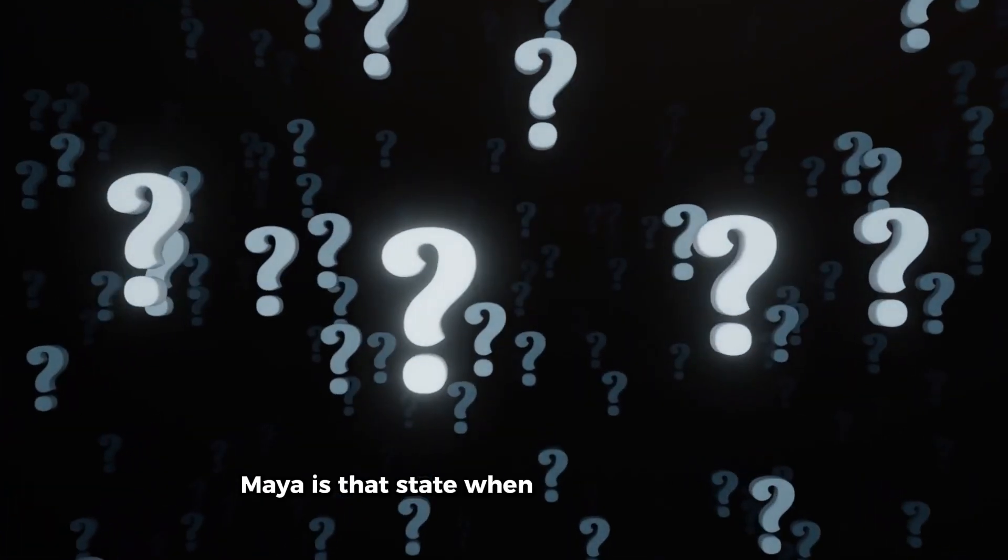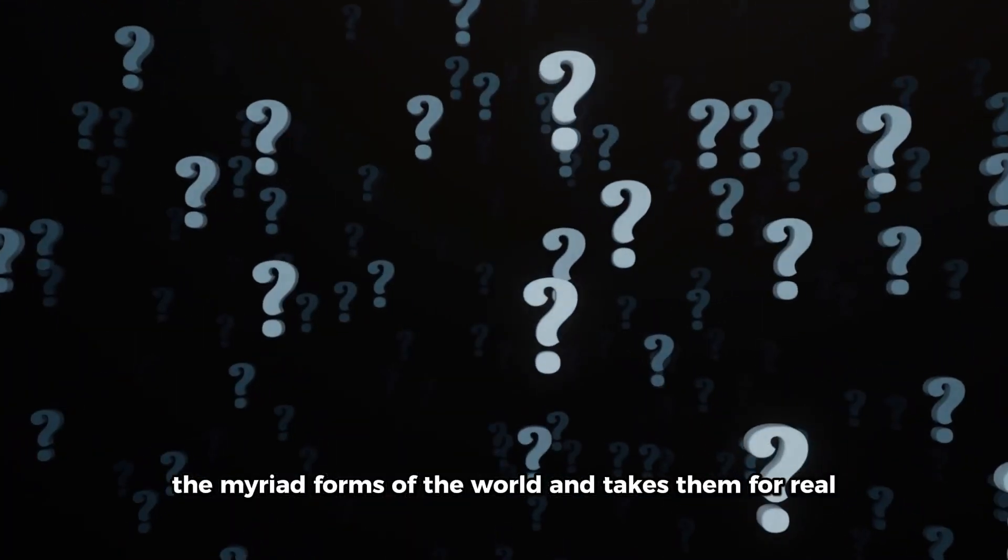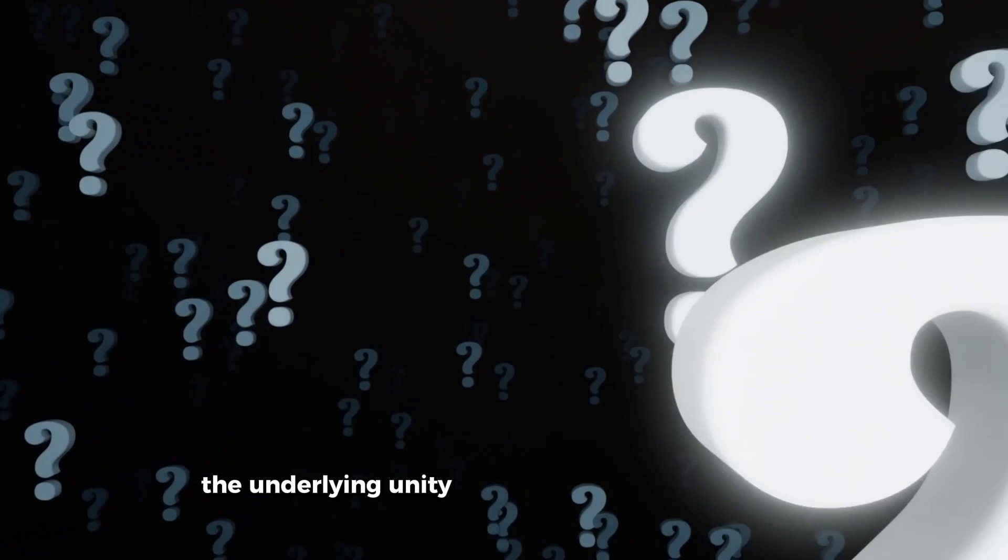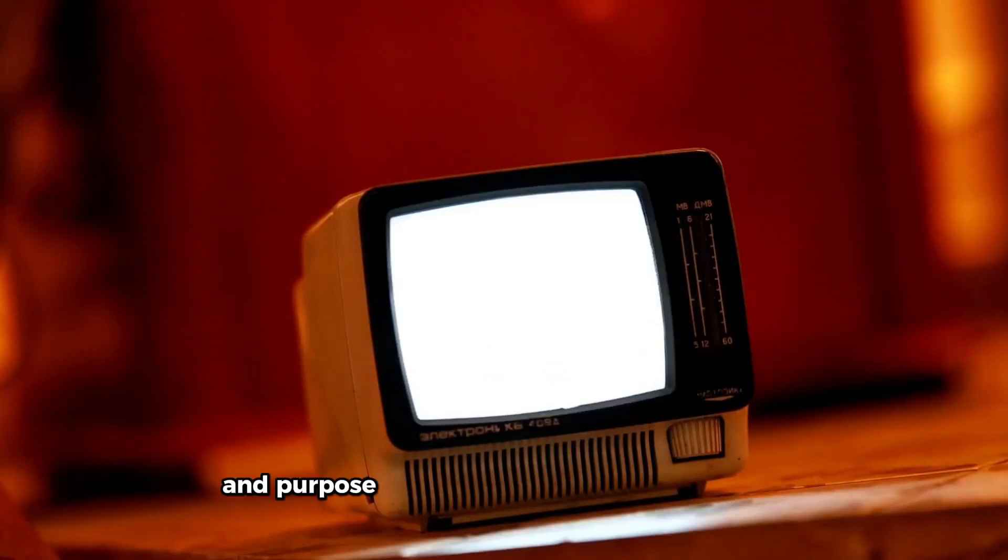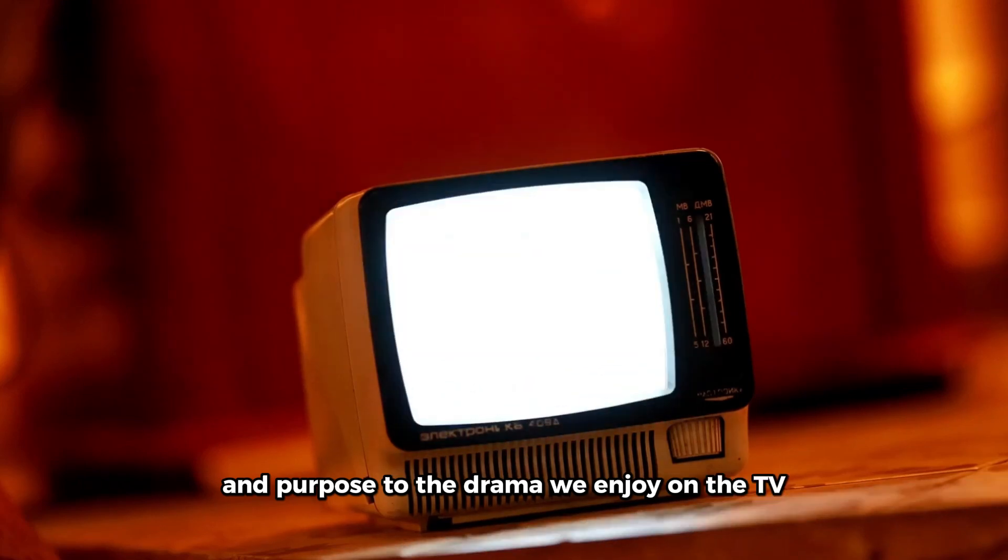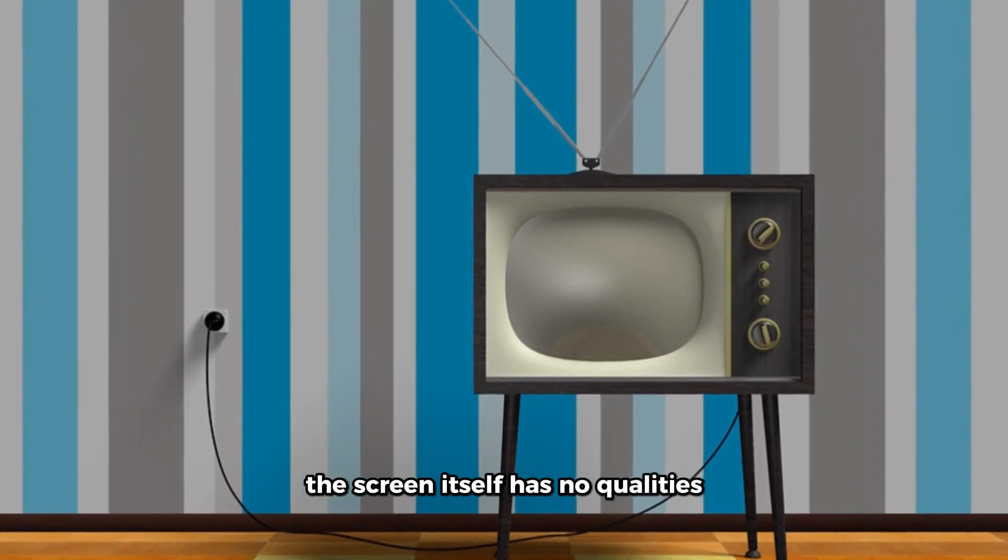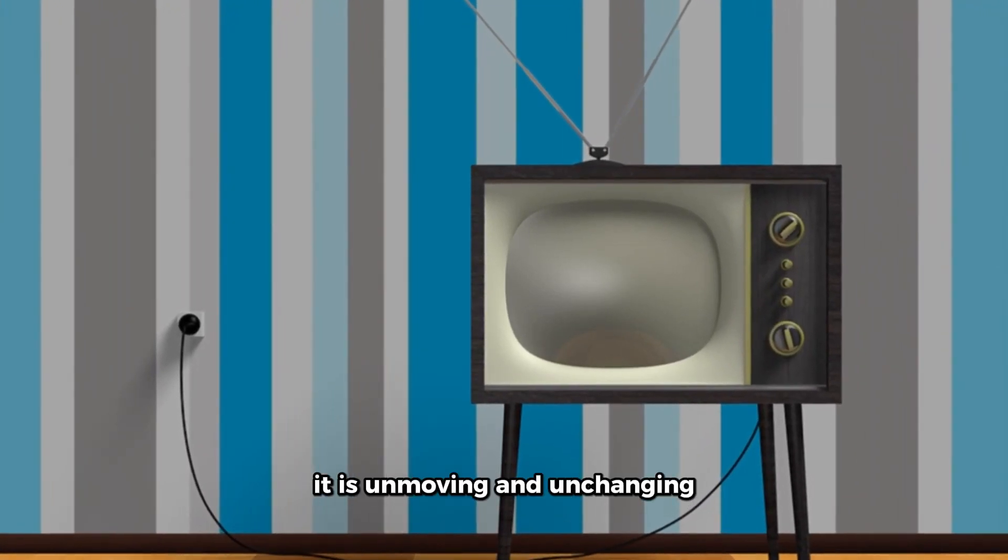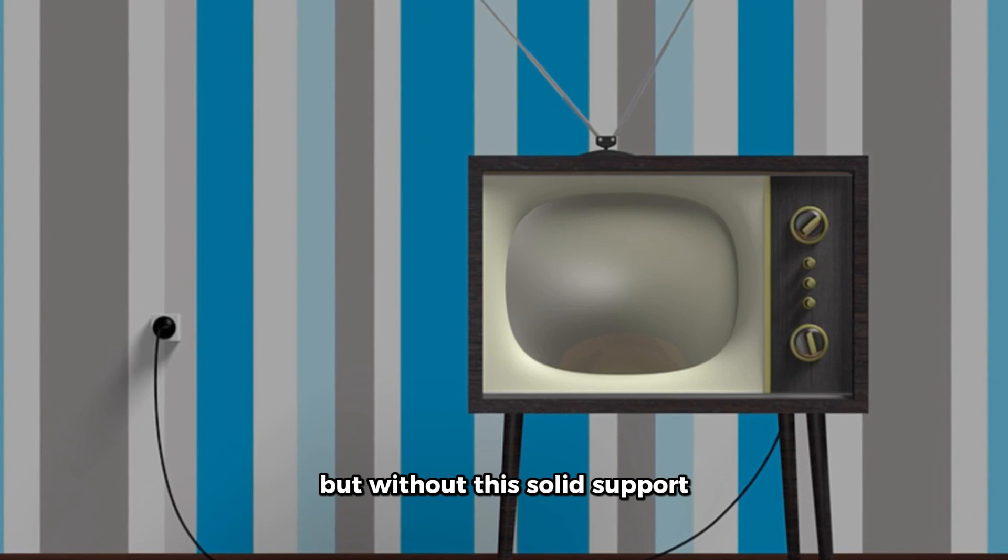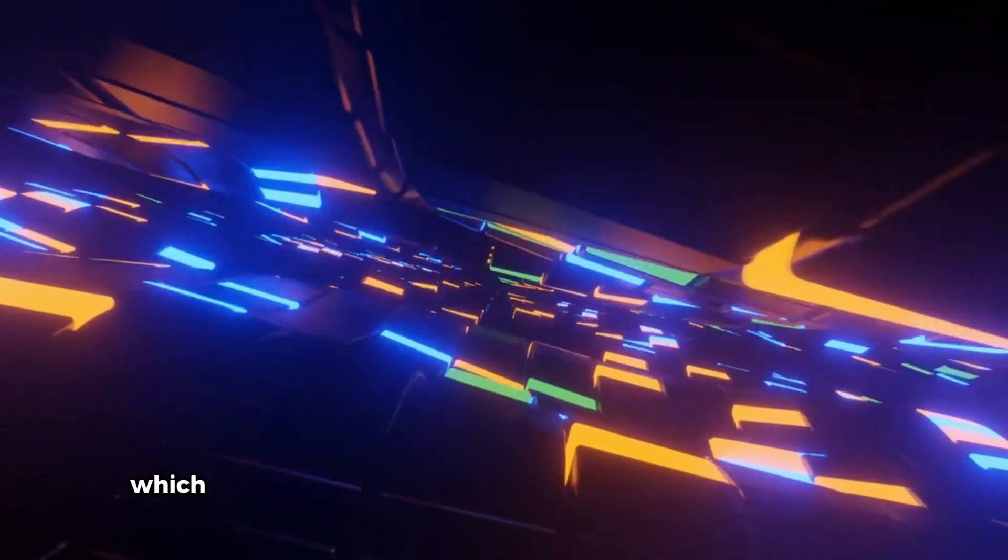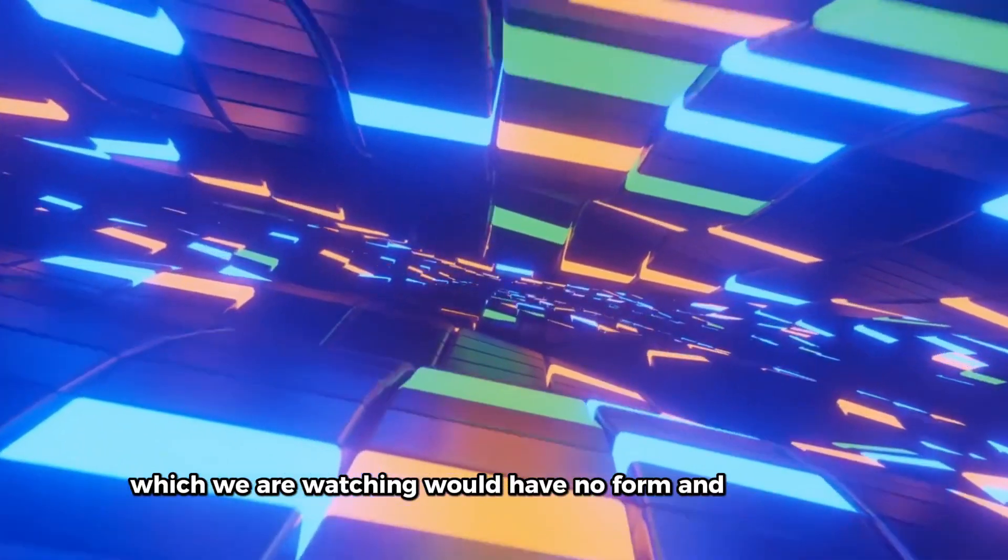Maya is that state when the mind confuses the myriad forms of the world and takes them for real without apprehending the underlying unity that binds them all together. What gives form and purpose to the drama we enjoy on the TV is the firm, unchanging, pure white screen beneath. The screen itself has no qualities. It is unmoving and unchanging, but without this solid support, the play of light and shade which we are watching would have no form and no meaning.